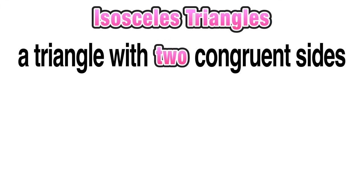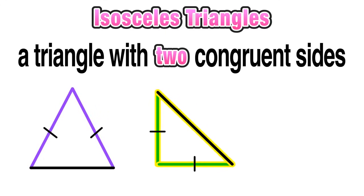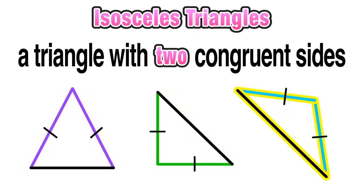We can look at some visual examples here. Notice that each of these three triangles has a pair of congruent sides, which is denoted by those little slash marks on the sides that are congruent to each other. These are all examples of isosceles triangles.